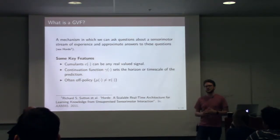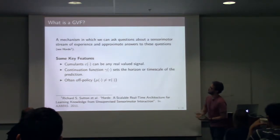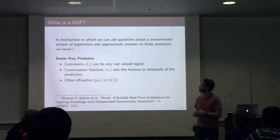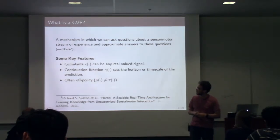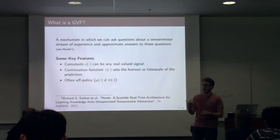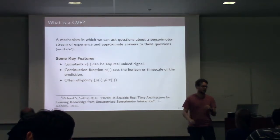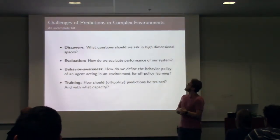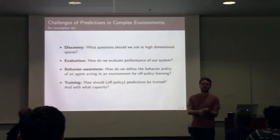Some key features, like I assume most of you have been coming to a lot of the talks over the summer, and GVFs has been a hot topic that we've been discussing a lot. Some of the key features are cumulant, so the things that we consider rewards in a more traditional value function can be any real valued signal that we get from our environment. We have a continuation function, so this really sets the horizon of which we're looking at, or the time scale of the prediction. And then often we want our general value functions to be off policy. And I have this belief that off policy predictions have a lot more power than on policy predictions, and they can give us a lot more information about the world. Here are some of the things that are cool that we use predictions for. I'm just going to skip over them.